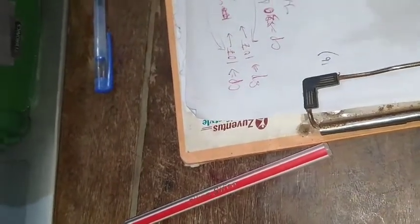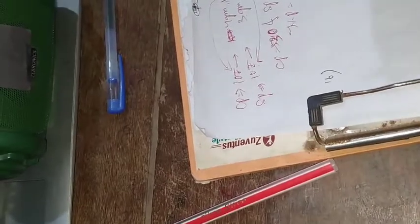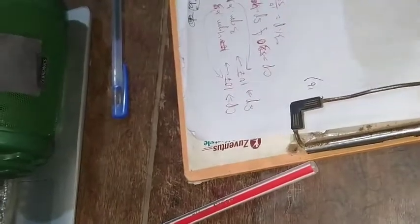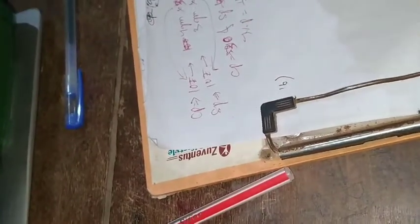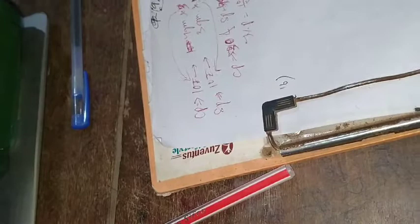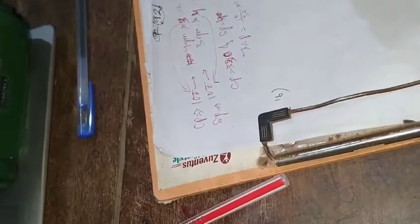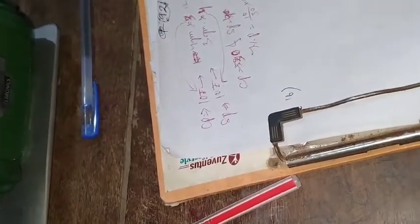A shopkeeper promises to sell his goods at 10% loss, then 20% less weight — find his actual profit percentage.